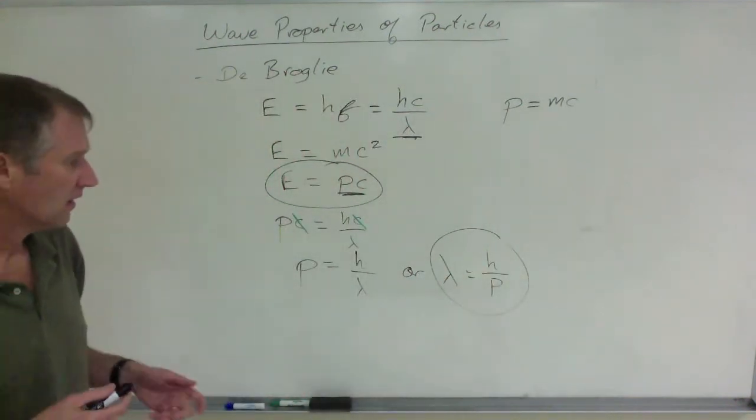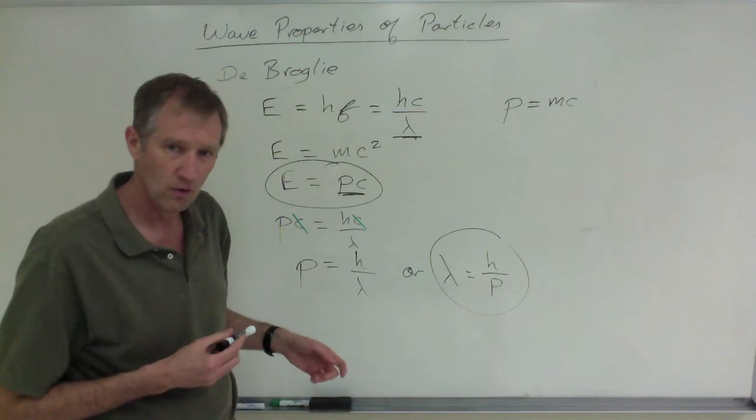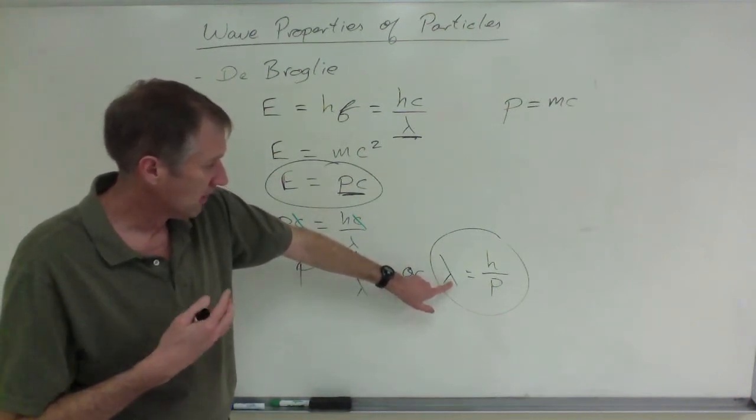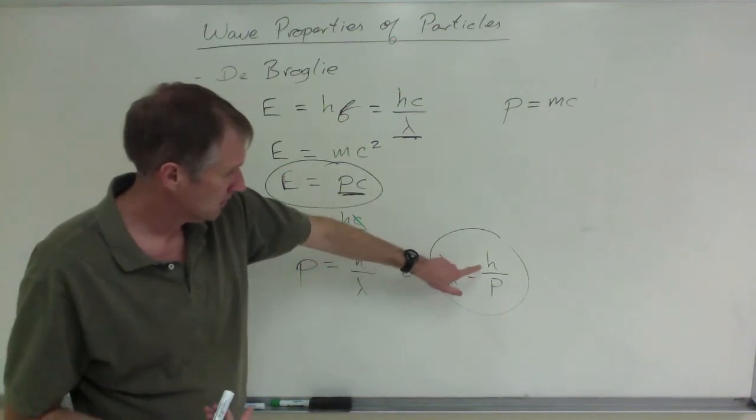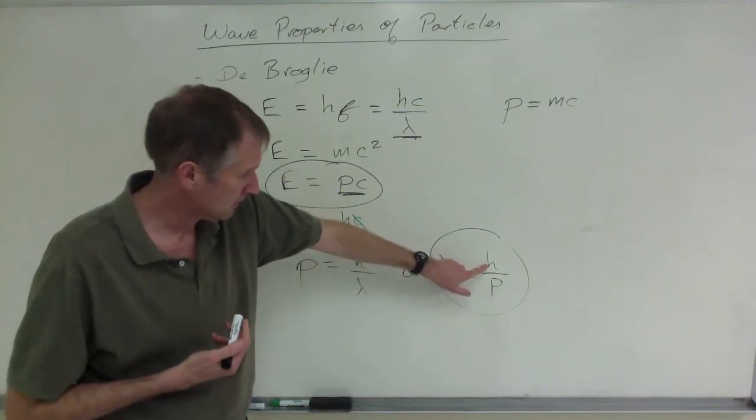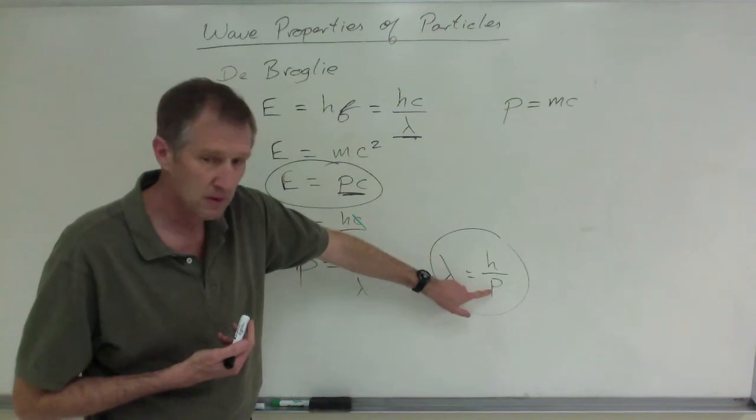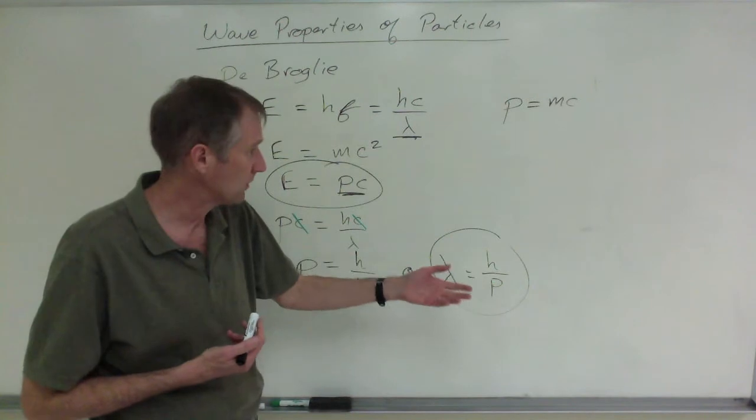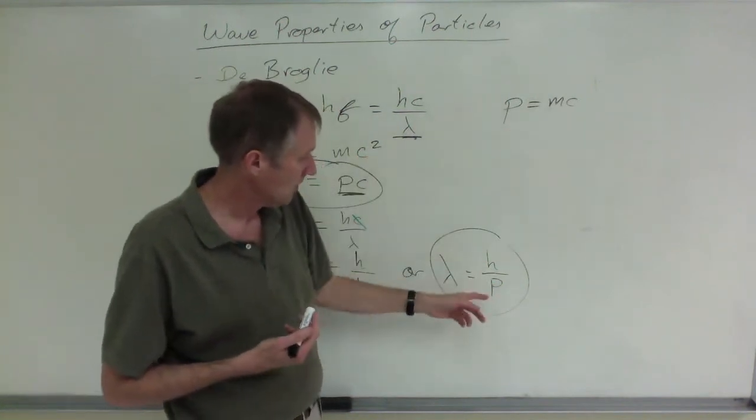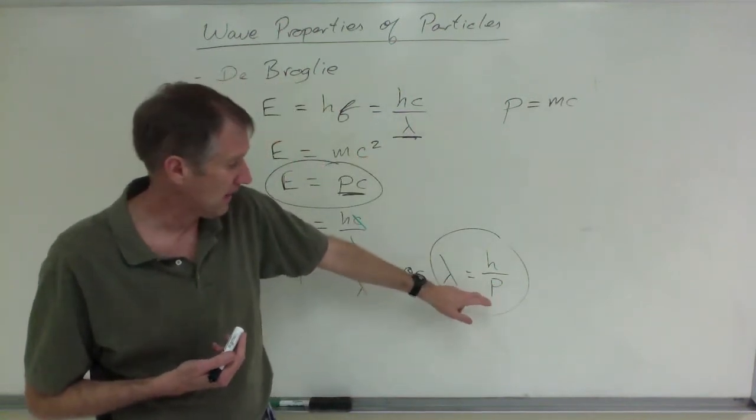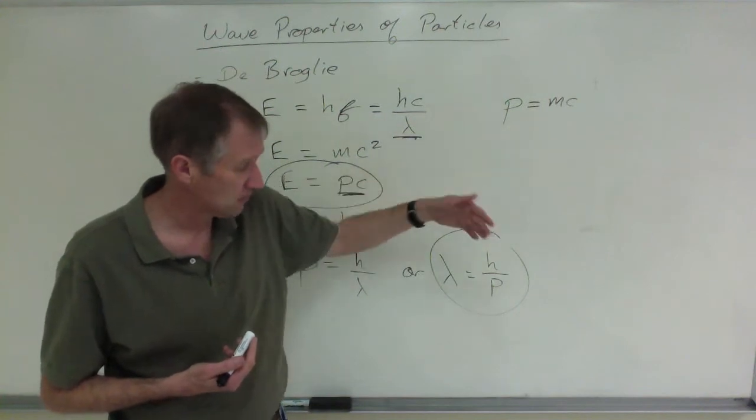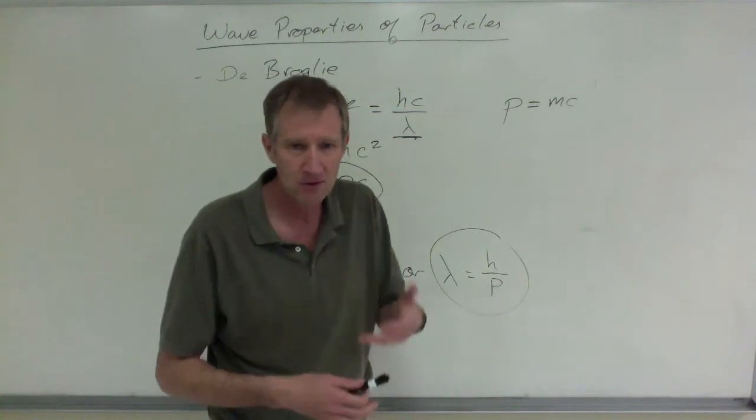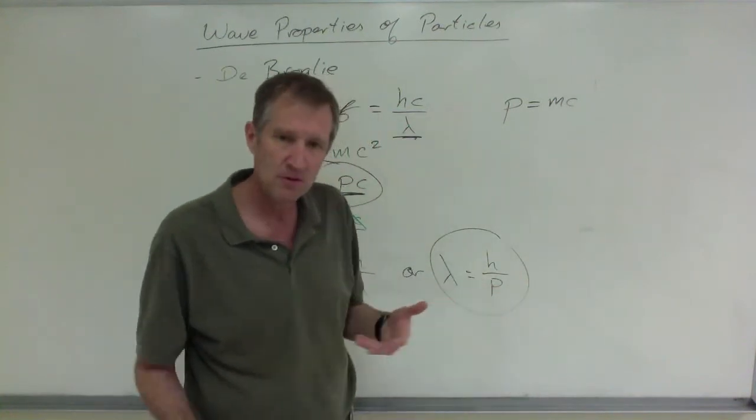That equation is given on the equation sheet for AP Physics. The wavelength of a particle is equal to Planck's constant divided by the momentum of that particle, whether that particle is a photon mass times velocity, which would be m times c, or a baseball, the mass of the baseball times whatever speed it is, or your car, you know, driving with whatever mass times the velocity.